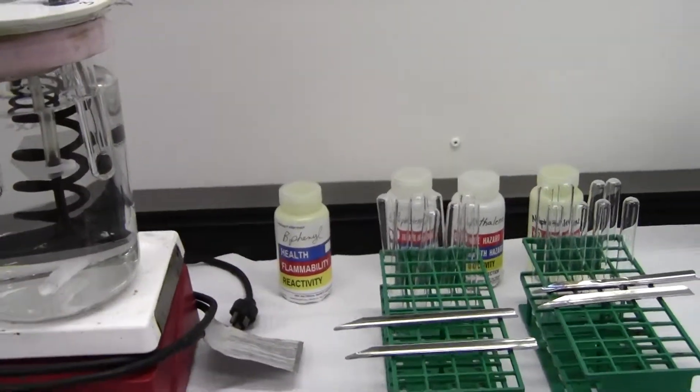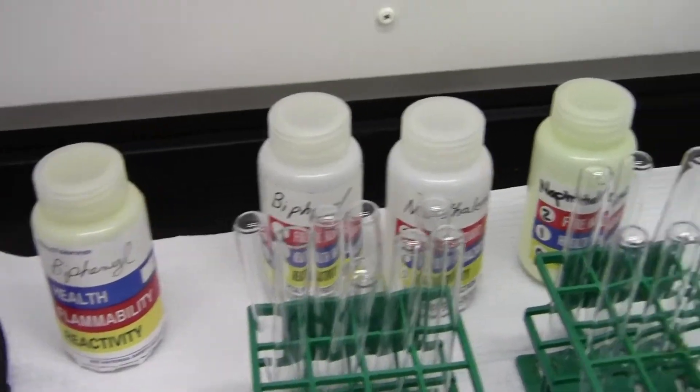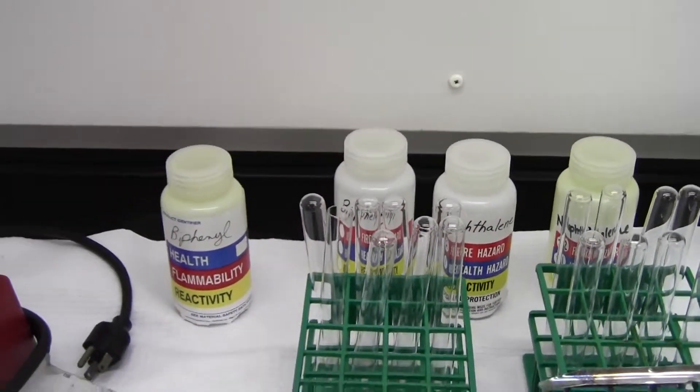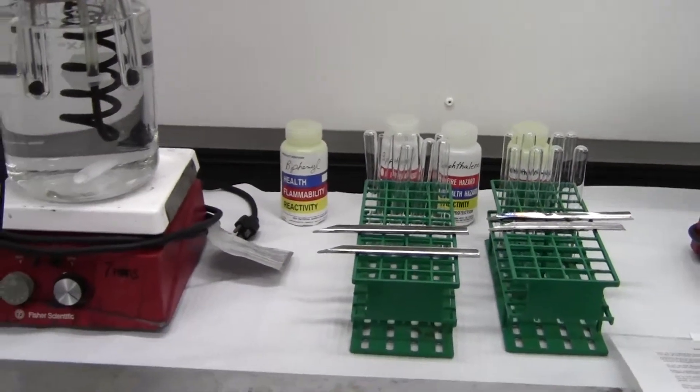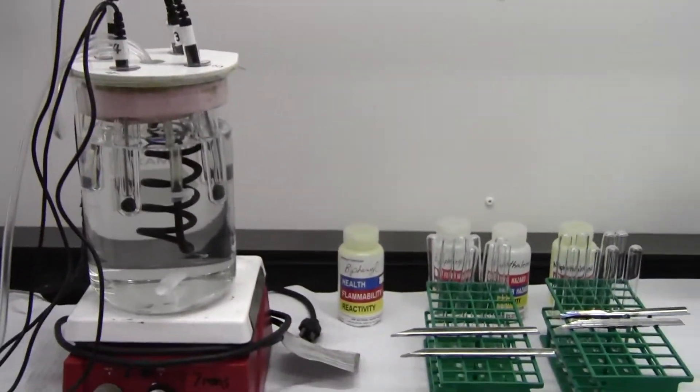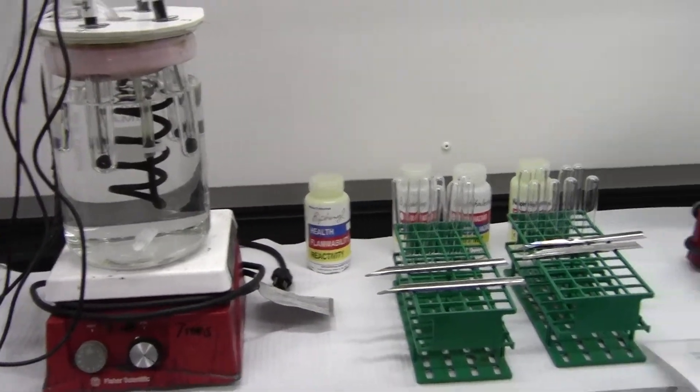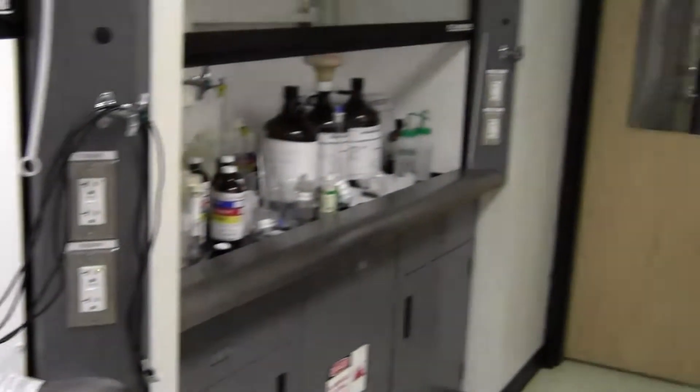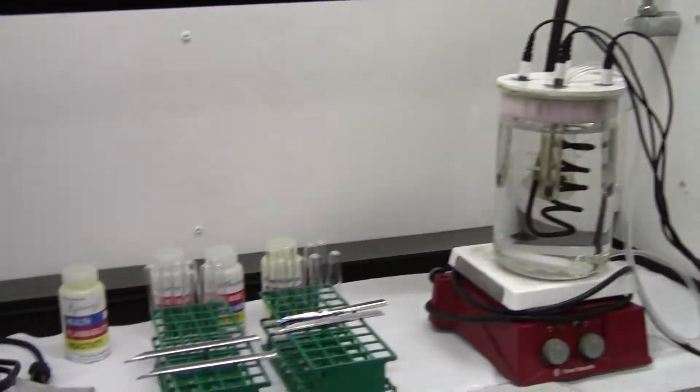So the two solids you're using are naphthalene and biphenol. The naphthalene especially is quite volatile as a solid. It's the stuff that mothballs are made out of, if you're familiar with that awful smell. So just be careful when you're in the balance room and going back and forth to keep things covered so nobody gets a headache.